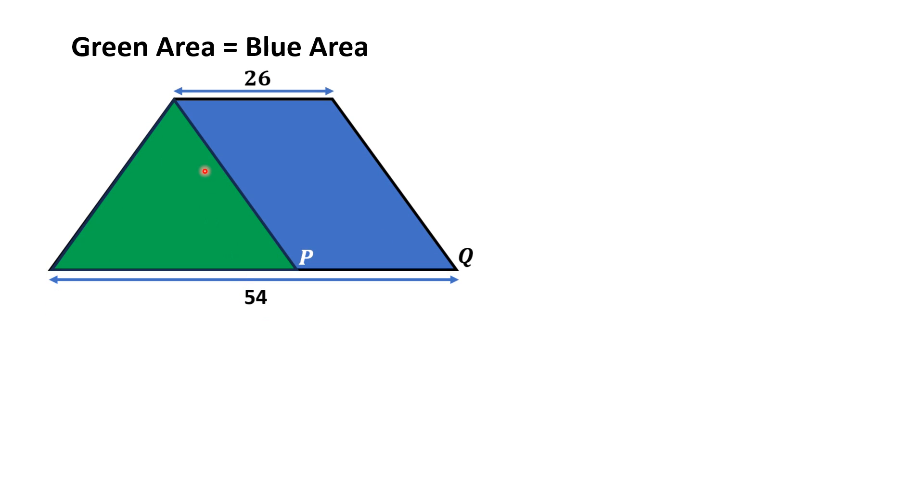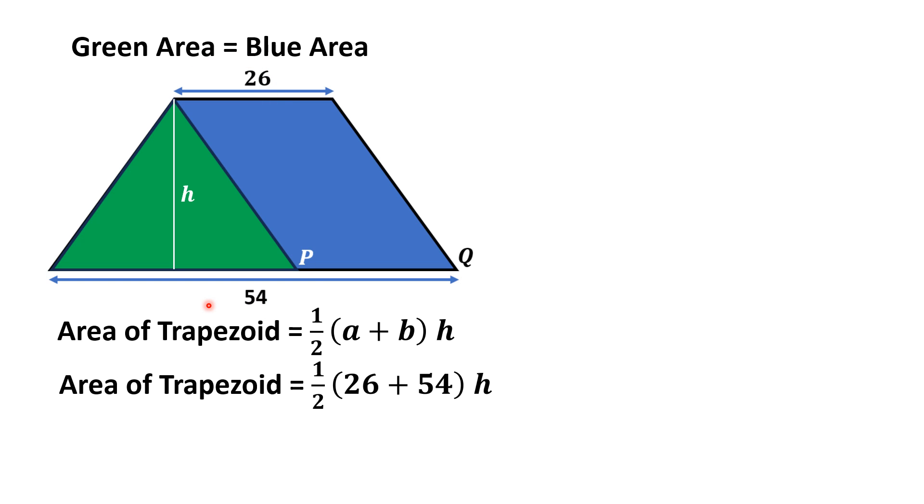First we draw a perpendicular which is the height of both the trapezoid and the green shaded triangle. We know that the area of a trapezoid is equal to 1/2 times (a + b) times h. Here a is 26 and b is 54, and after simplification we find the area of the trapezoid is 40h.